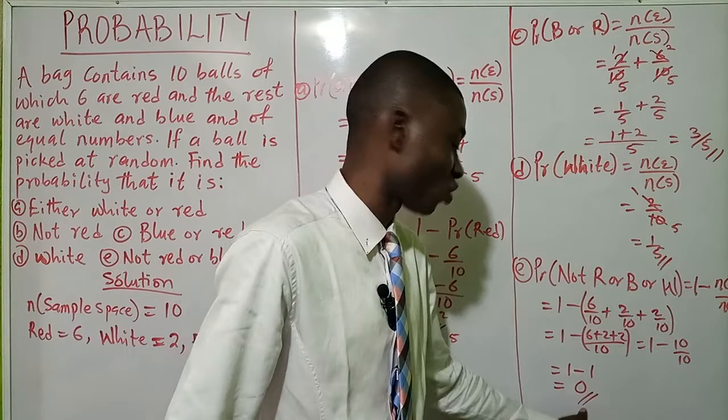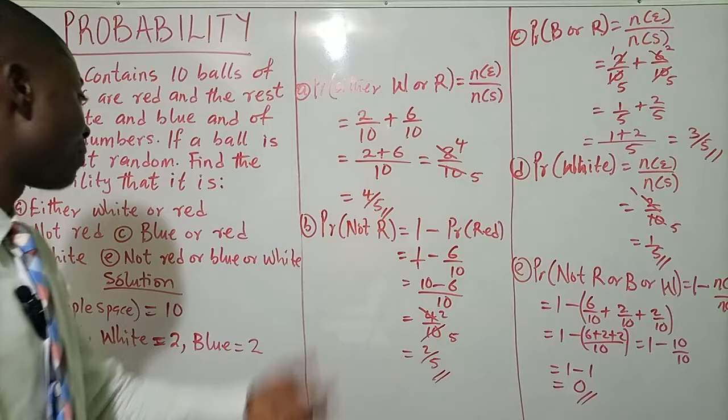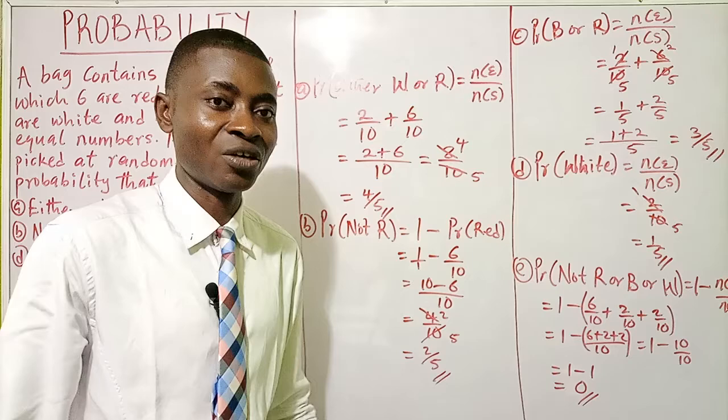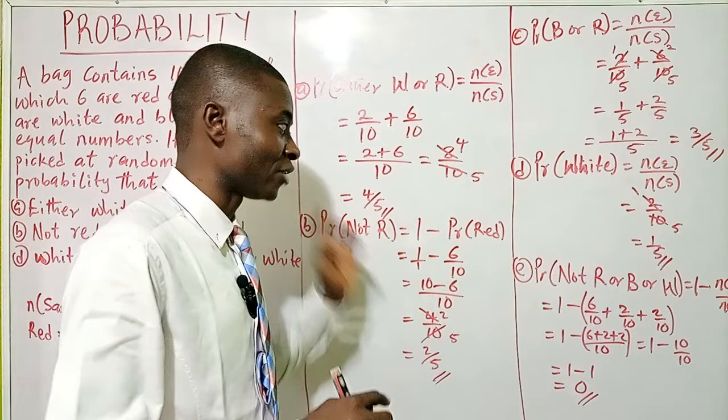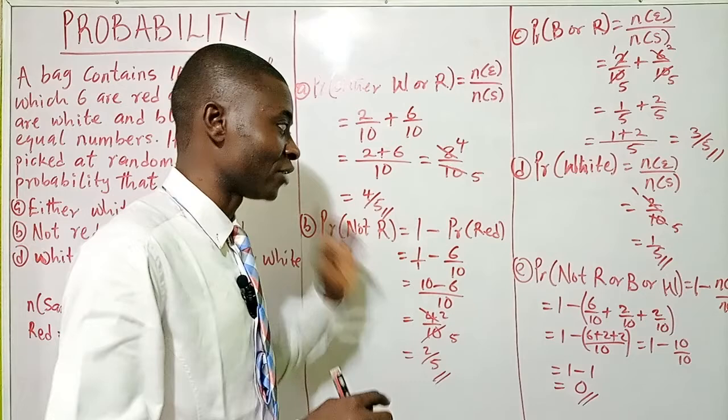Ten divided by ten is one, so one minus one equals zero. The probability of not picking red or blue or white is zero. Of course, since we only have red, blue, and white balls, not picking any of them is impossible. Again, don't forget: probability of an event not occurring is one minus probability of that event occurring.